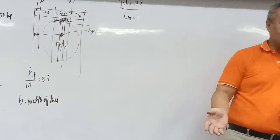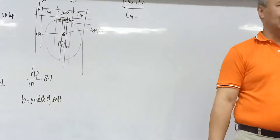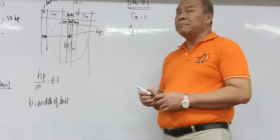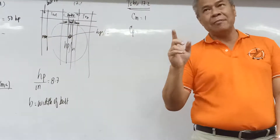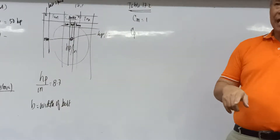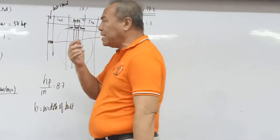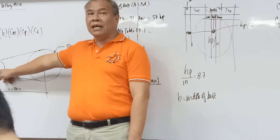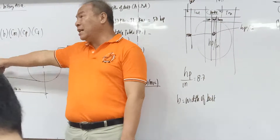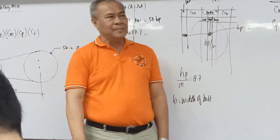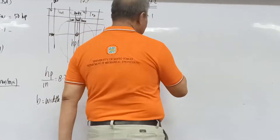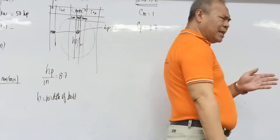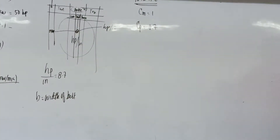From the ALBA equation: HP = (HP/inch) × B × C_P × C_M × C_F. Substituting: 50 = 8.7 × B × 0.7 × 1 × 1. Solving for B gives a belt width of approximately 8.2 inches. This is how we compute the belt width using the ALBA table.